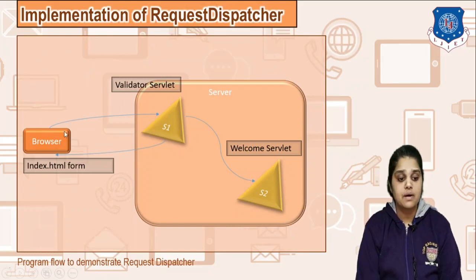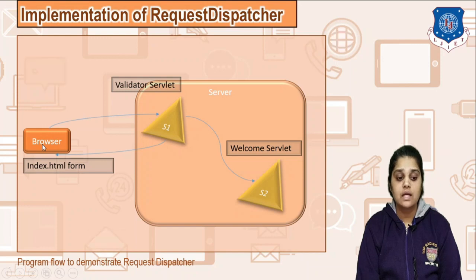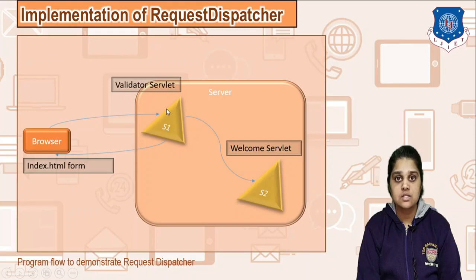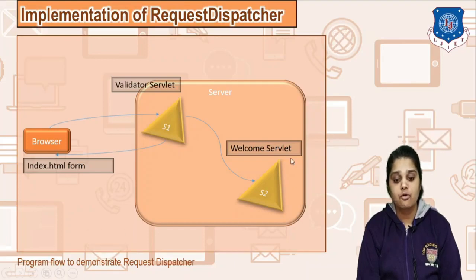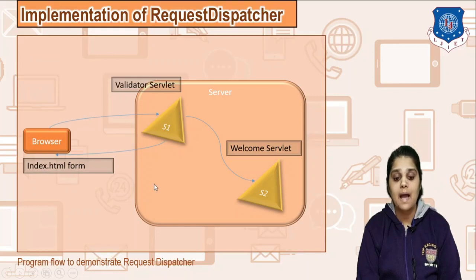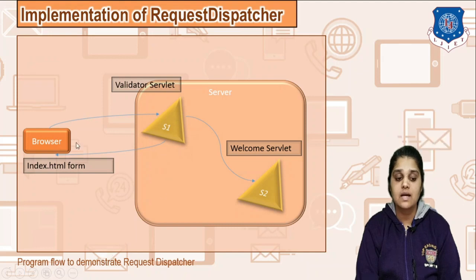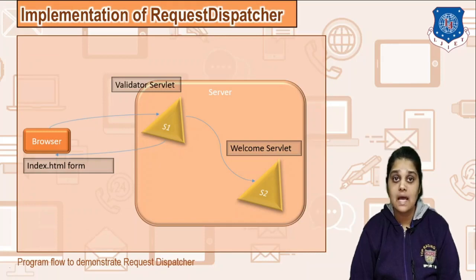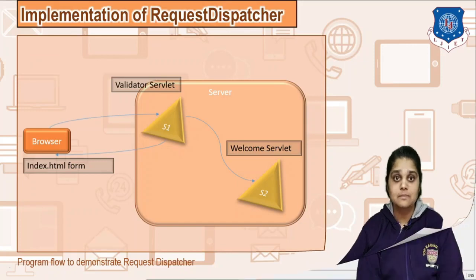Diagrammatically: your web browser runs index.html, which takes username and password and redirects to S1, the validator servlet. The validator servlet validates the login credentials. If they are okay, you move to the welcome page handled by the welcome servlet using the forward method. If the user is invalid, we are going to include the index form back into the validator servlet and return it to the browser. We'll see both the forward and include methods in the following program.